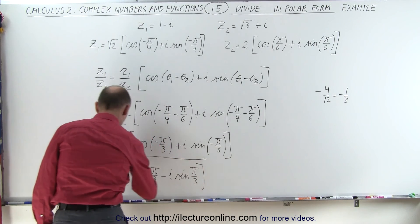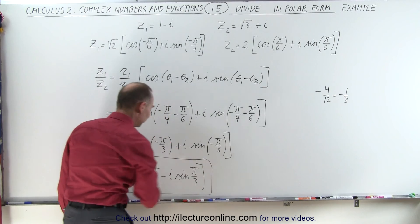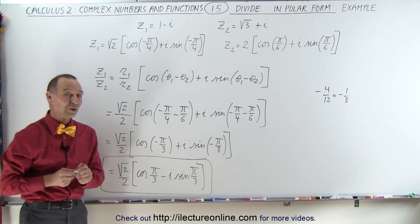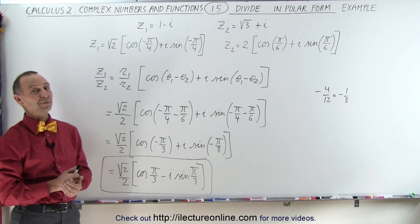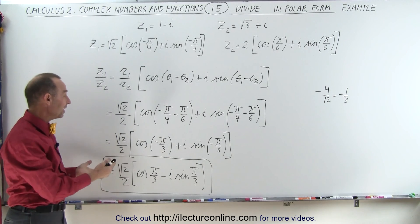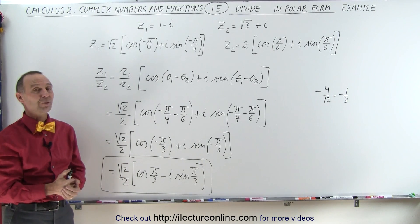And that would be a good final format of the quotient of those two complex numbers. That's how it's done, and it's fairly easy once you have it in polar form.